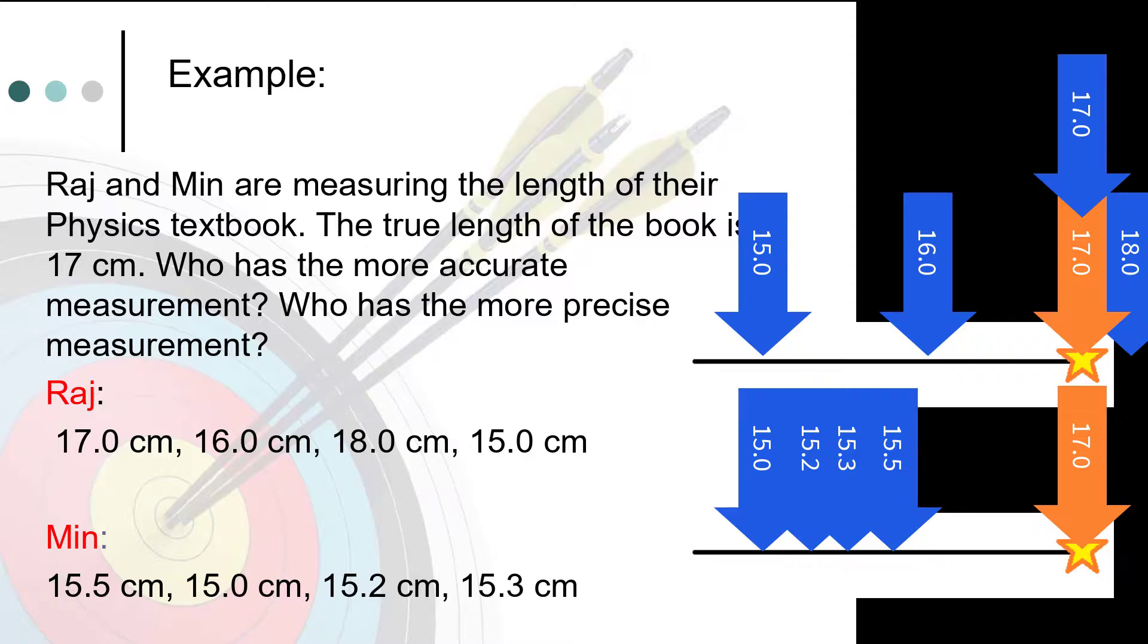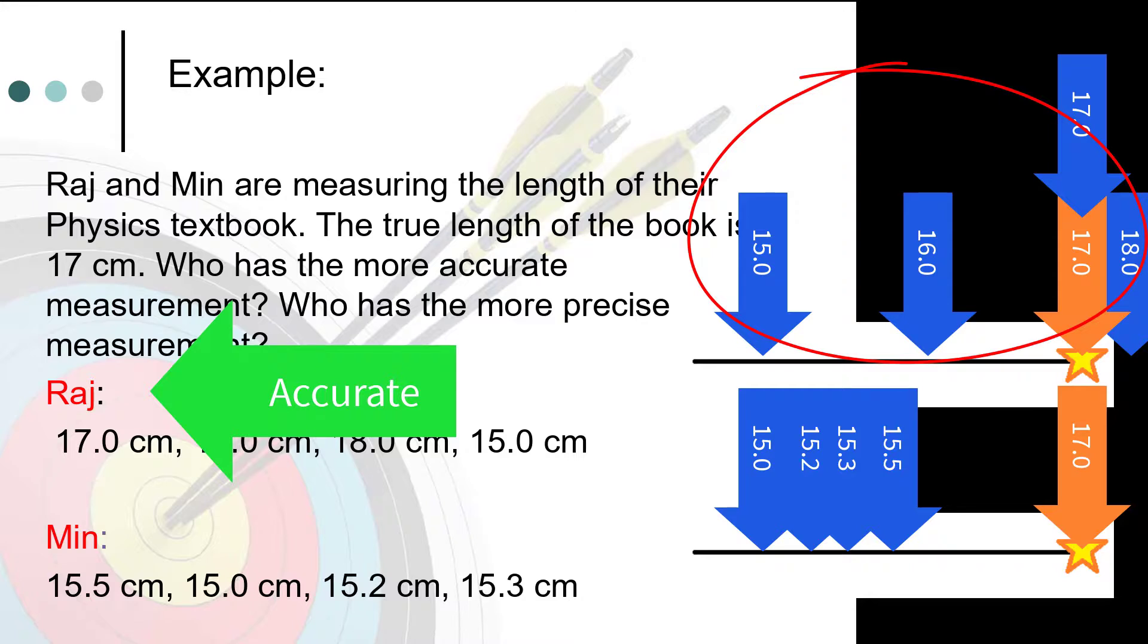Clearly, all of Raj's values fall near to the target value of 17. Being near the target value means that Raj has the more accurate measurement.